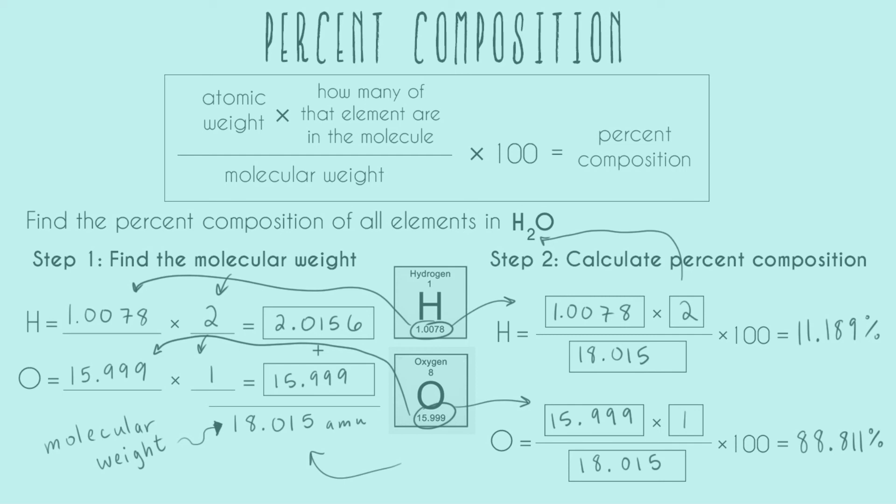Another thing - we always multiply by 100 in this formula because we're doing a percent. Something you want to pick up on with these problems is to notice the difference between how many of each element you have and what the total mass percent is. For hydrogen, we actually have twice as many as oxygen - two compared to one.